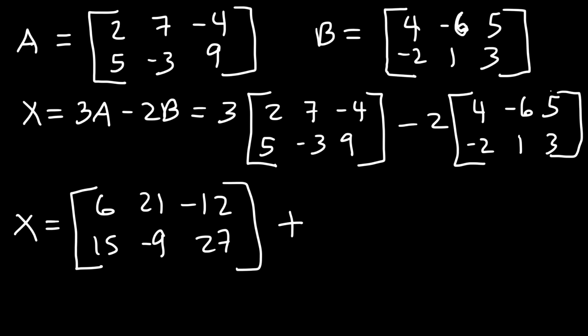Now let's multiply every element in this matrix by -2. So it's going to be -8, 12, -10, 4, -2, and -6.